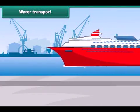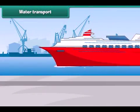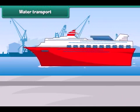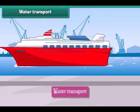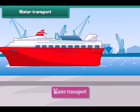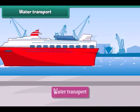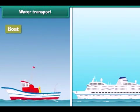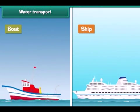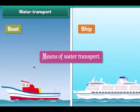The movement of goods and passengers on water is called water transport. The vehicles that carry goods and passengers through waterways are called means of water transport. Boats and ships are the means of water transport.